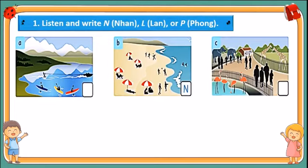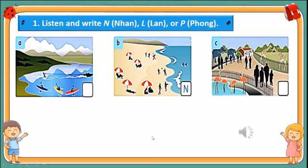These pictures are about the activities that people do during their vacation. Today we are going to listen to three people — Nhân, Lan, and Phong — talking about their vacation. Listening task: listen and write N for Nhân, L for Lan, or P for Phong.